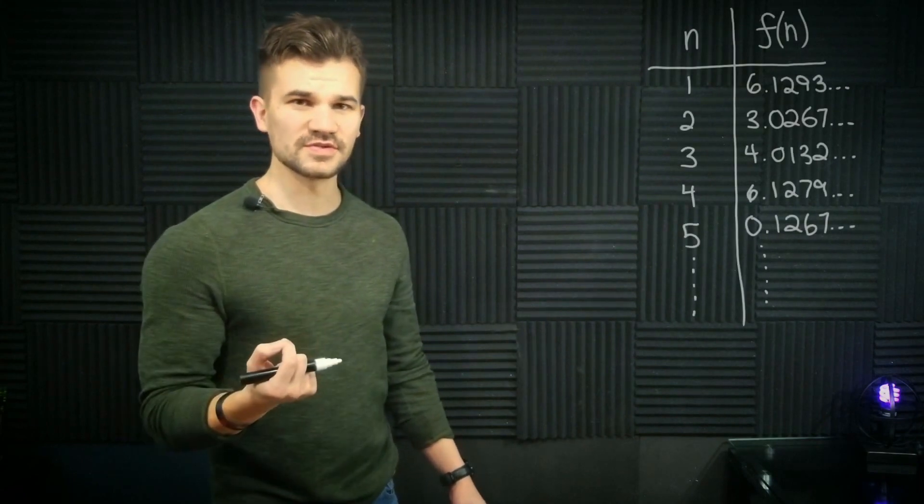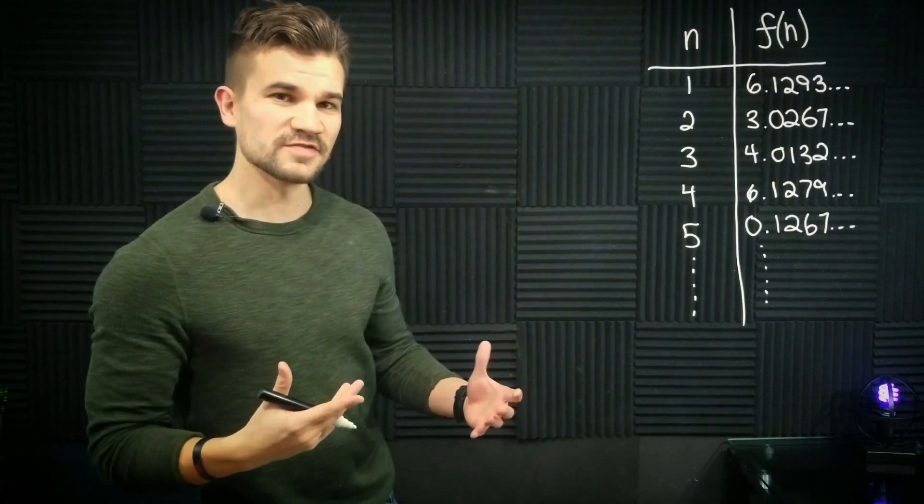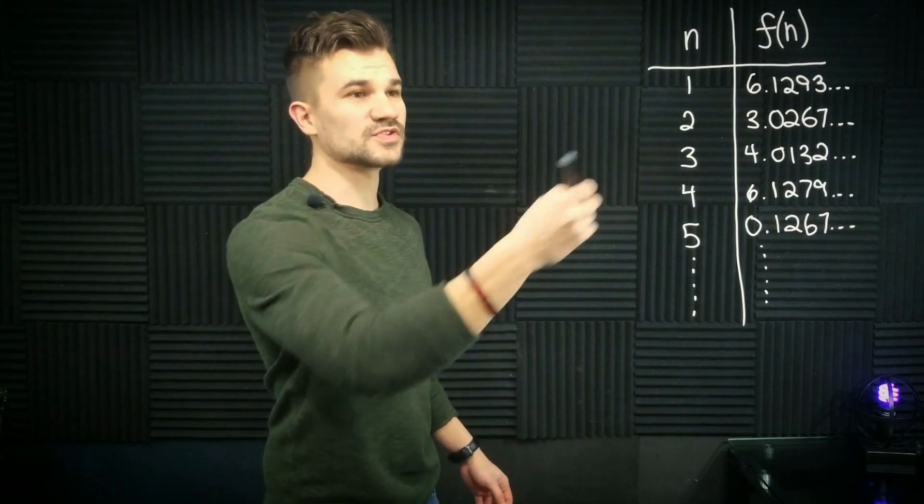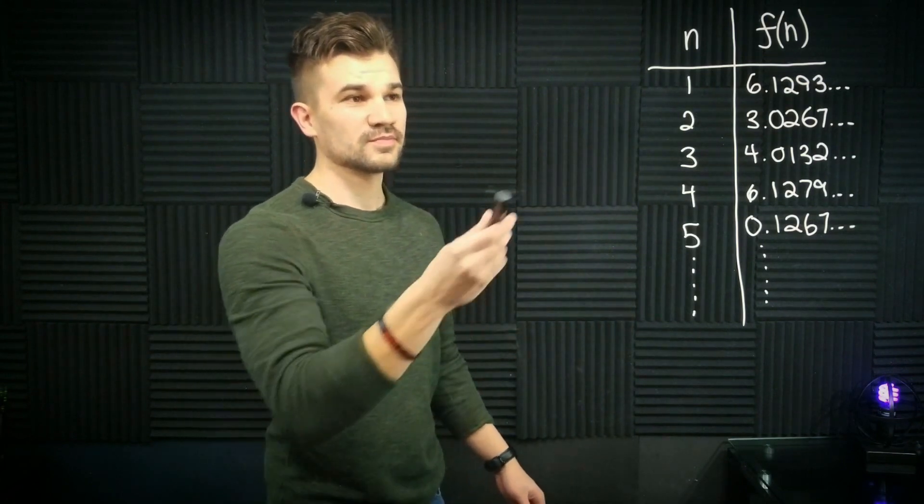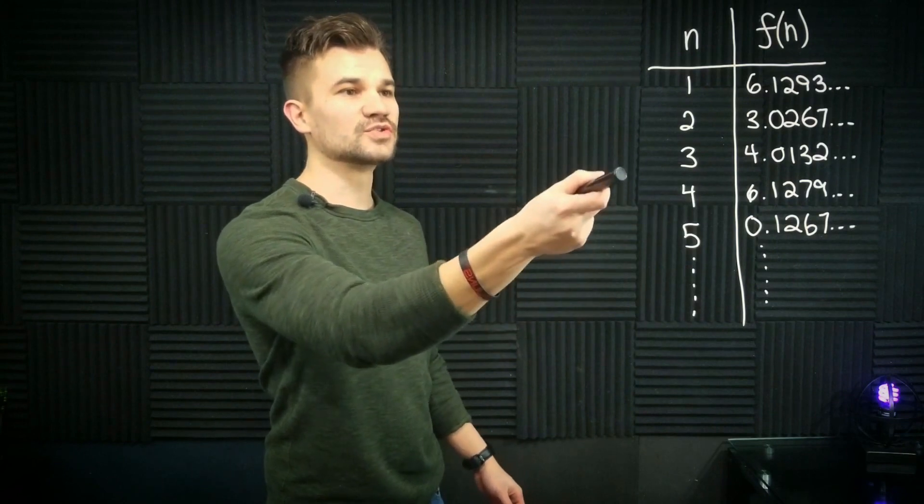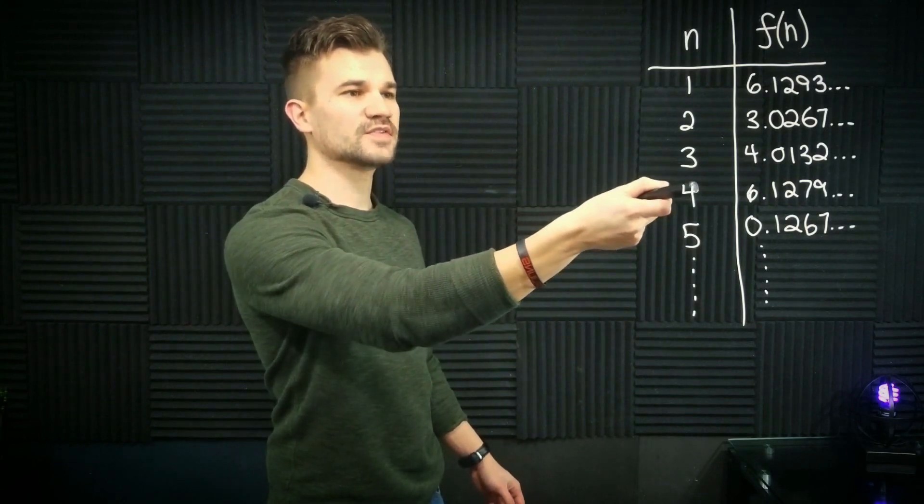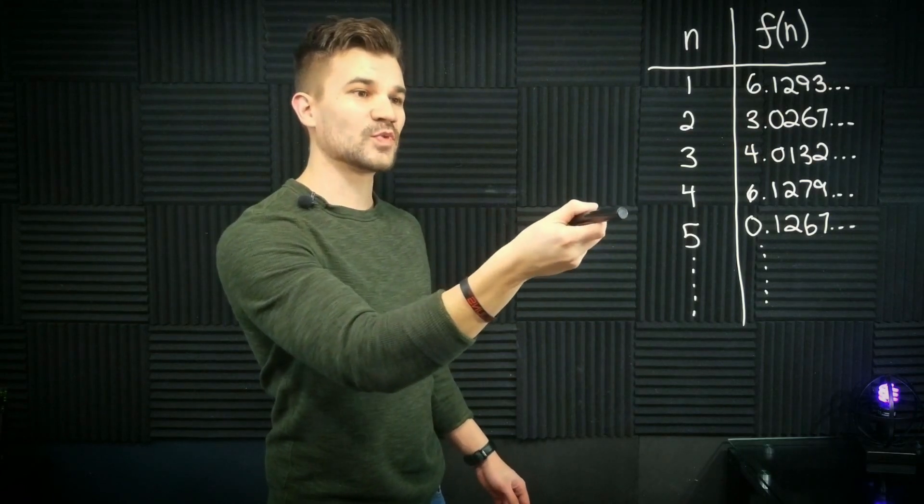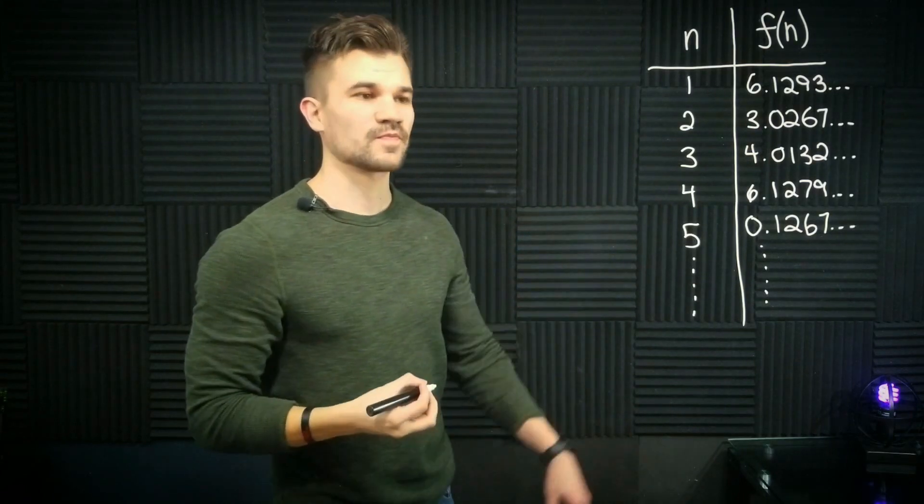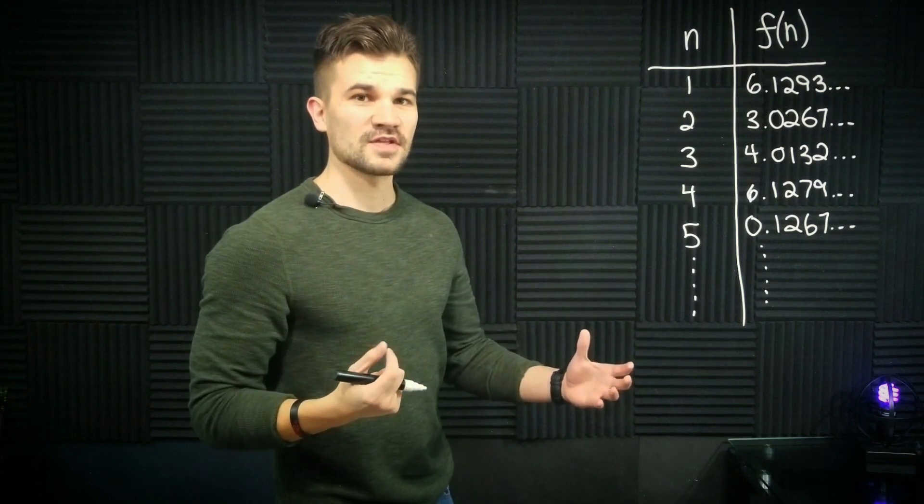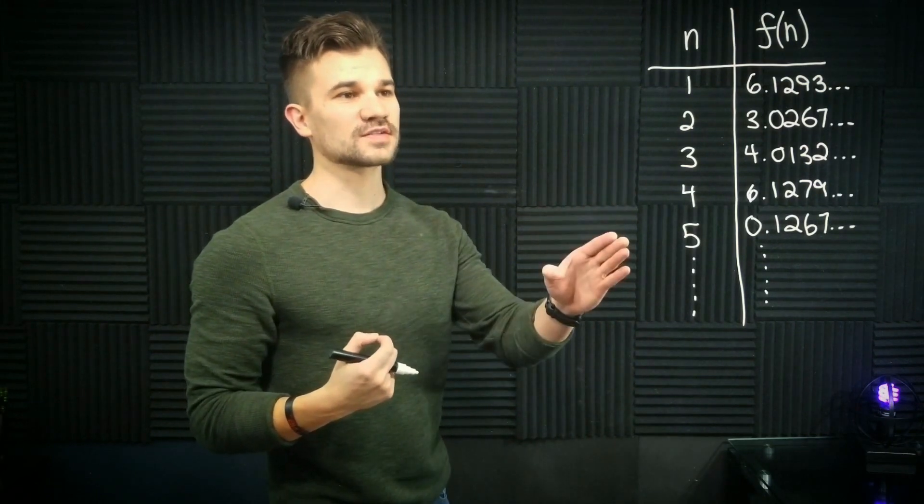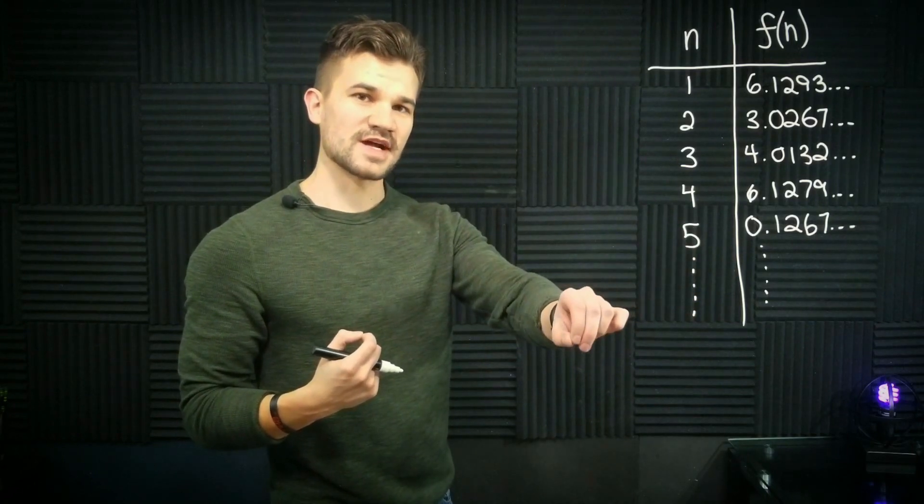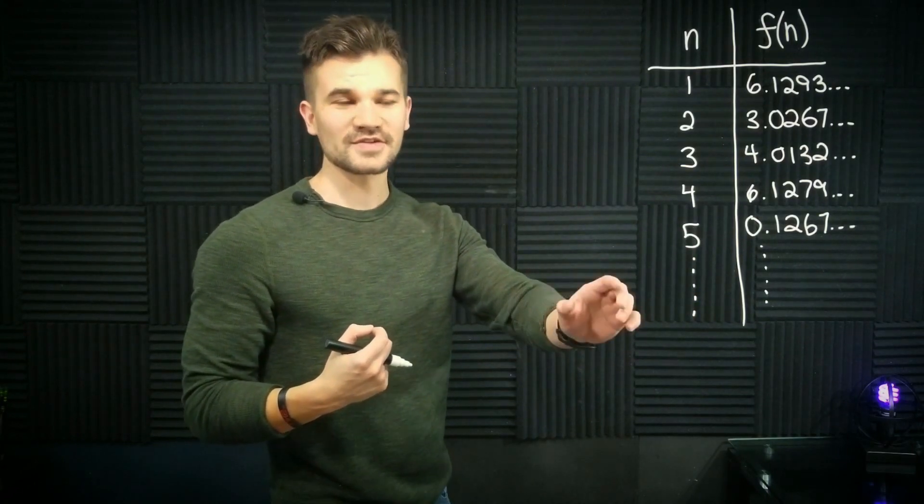So here's how we do that. So here's a table of some function from the naturals to the reals. It takes 1 to 6.1293 and so on. It takes 2 to 3.0267, 3 to 4.0132, 4 to 6.1279 and so on. The specifics don't matter. The point is that we're going to be able to construct an element of the real numbers that can't possibly be mapped to from the naturals. This is through what's called a diagonal argument.